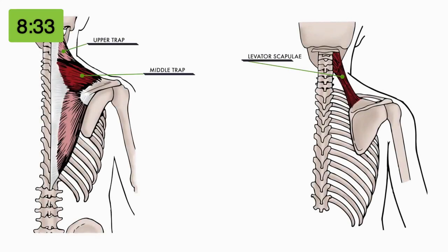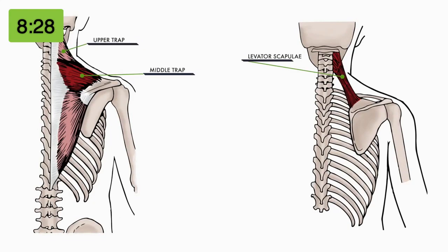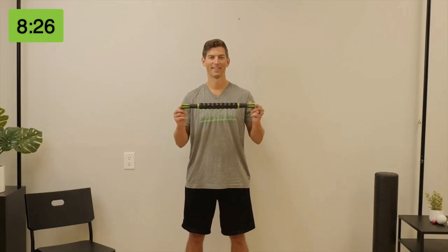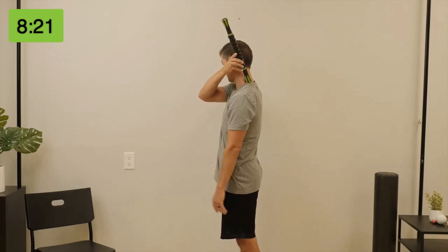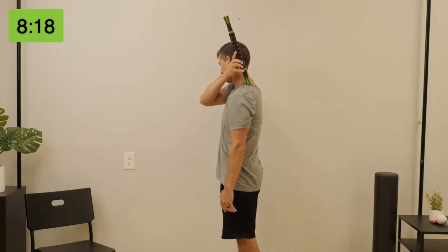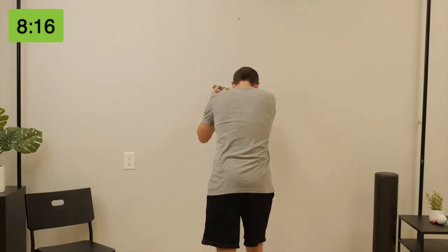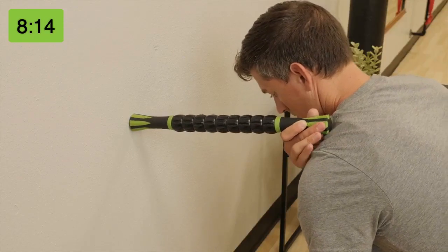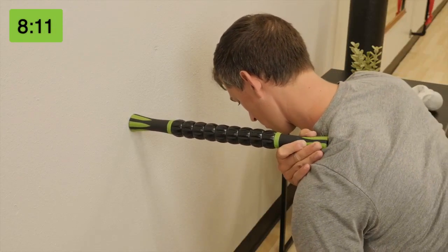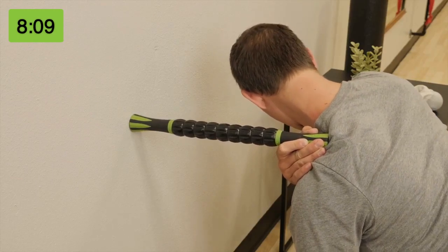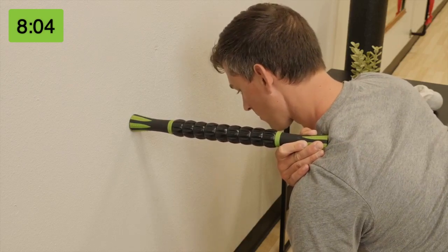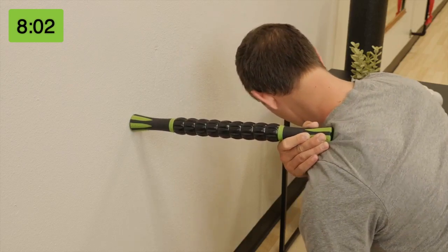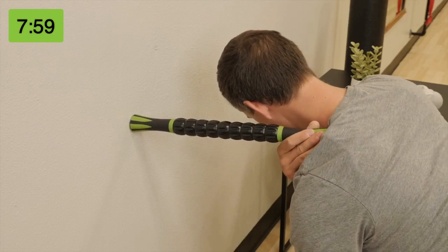Our final release is going to be on the upper and middle trap and levator scapula — these muscles contract the shoulder to the head. This release requires a massage stick and a clear wall. Locate the trap and levator which holds the shoulder up to the ear. Once located, lean against the wall allowing the stick to press down into the shoulder. Then start turning your head down and away from that trap, holding the massage stick with the right hand and letting it push the left shoulder down.